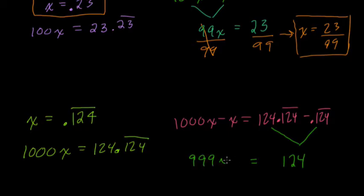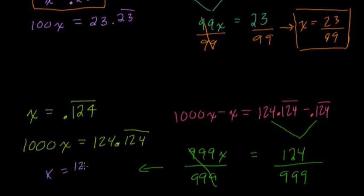Look how nice this is. Because we multiplied by 1,000 and moved our decimal three times to the right, we're able to cancel out the repeating sequence here. We subtract 0.124 repeating, and that lines up perfectly with what's left over in the first decimal. So you have 124, and that will always work.